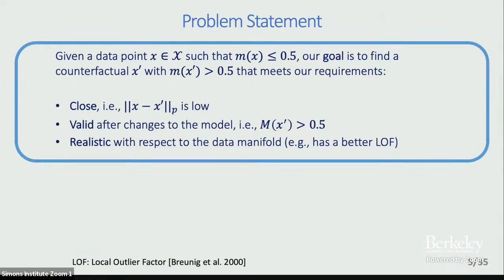This is the problem statement: we are given a data point x that is getting rejected by the model. M(x) is the model outcome which gives a value between 0 and 1, so less than 0.5 means you are getting rejected. The goal is to find another point or a counterfactual x prime which will be accepted by this model, which is as close to the original point as possible, remains valid after changes to the model, and is also a more realistic point with respect to the data manifold — you can't ask people to change something they cannot change, like their city of birth.